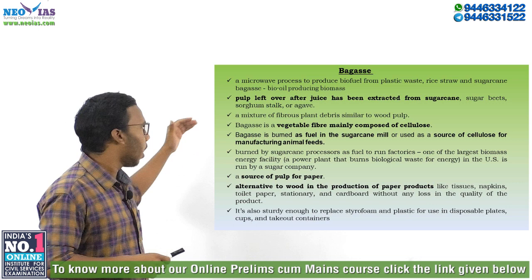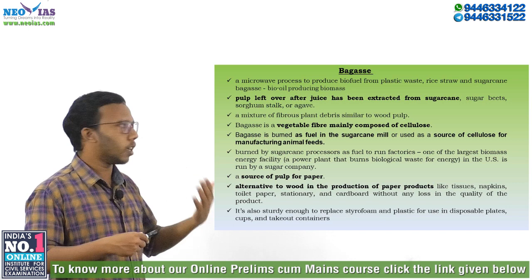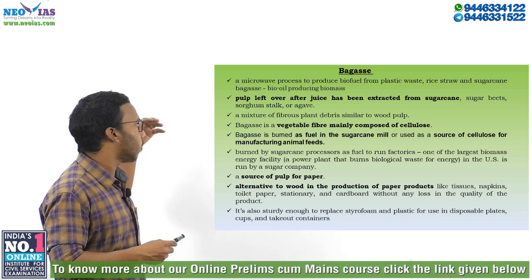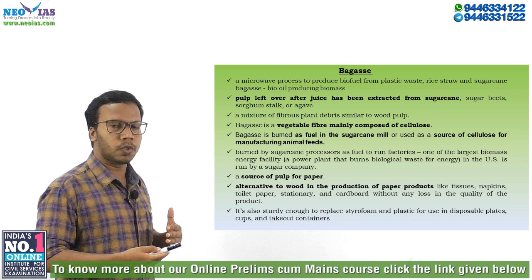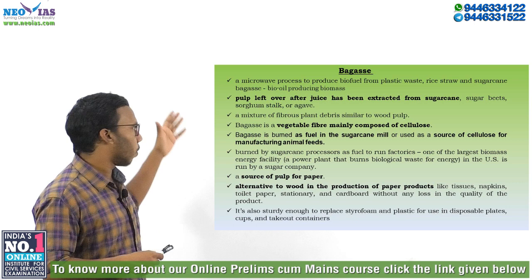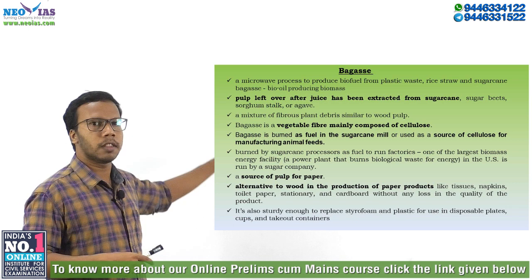This pulp called bagasse has long been burned by sugarcane processors as fuel for their industries. In fact, one of the largest biomass energy facilities in the US was run by a sugarcane company using bagasse. So bagasse can contribute significantly to the energy sector.